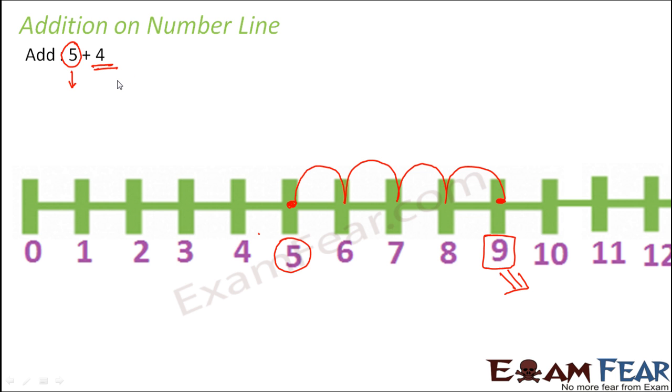How much do you want to add? You want to add 4. Now for 1, 1 is equivalent to 1 jump. So 4 is equivalent to 4 jumps. We make 4 jumps and arrive at 9. This shows that 5 plus 4 equals 9.